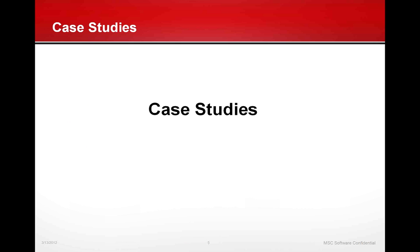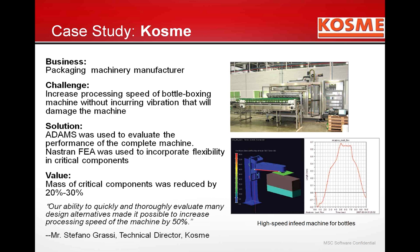Here's a packaging machinery manufacturer who wanted to speed up bottle boxing. Speeding up increases load frequency and can cause damaging vibration due to the modes of the machine — you don't know those modes until you bring in flexible bodies. Using Adams with NASTRAN FEA to build flexible bodies of the critical components, the end result was a mass reduction of 20 to 30% on those parts while still increasing the processing speed by 50%.